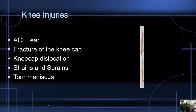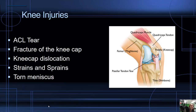Next, we have knee injuries. The most common ones are an ACL tear, fracture of the kneecap, kneecap dislocation, strains and sprains, or a torn meniscus. In the picture here, you can see where each of these may occur.